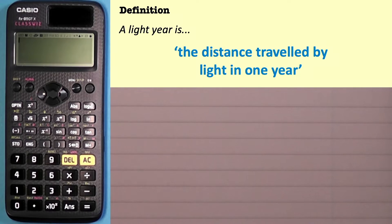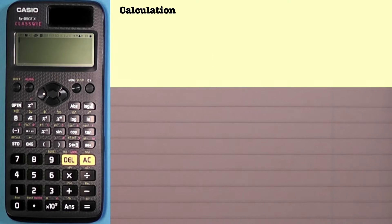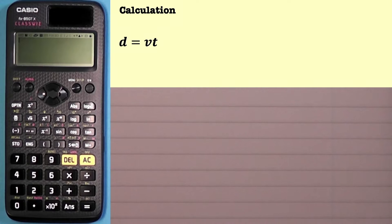How we actually work out the number of meters in a light year is by using an equation. The distance, measured in meters, is equal to speed v in meters per second, multiplied by time t in seconds. We need the speed of light and also the number of seconds within one year.